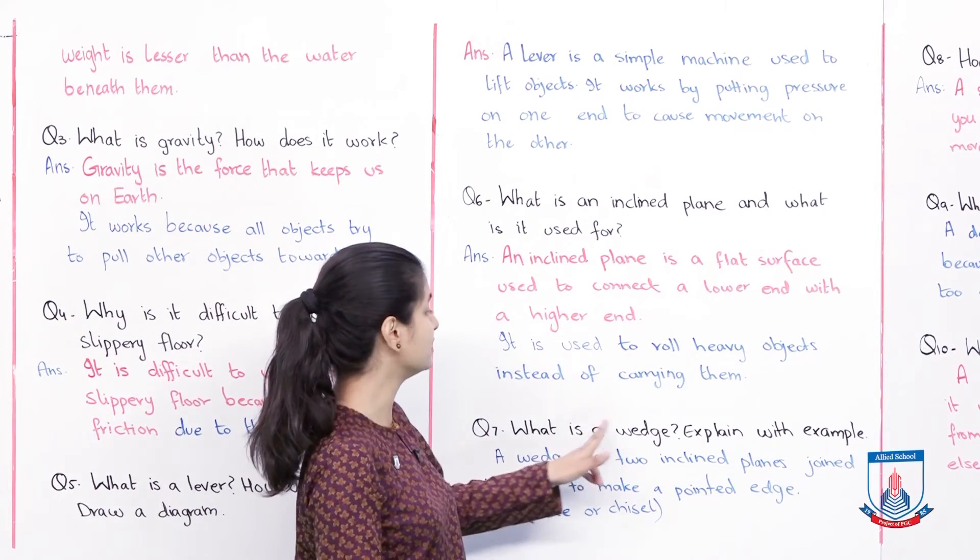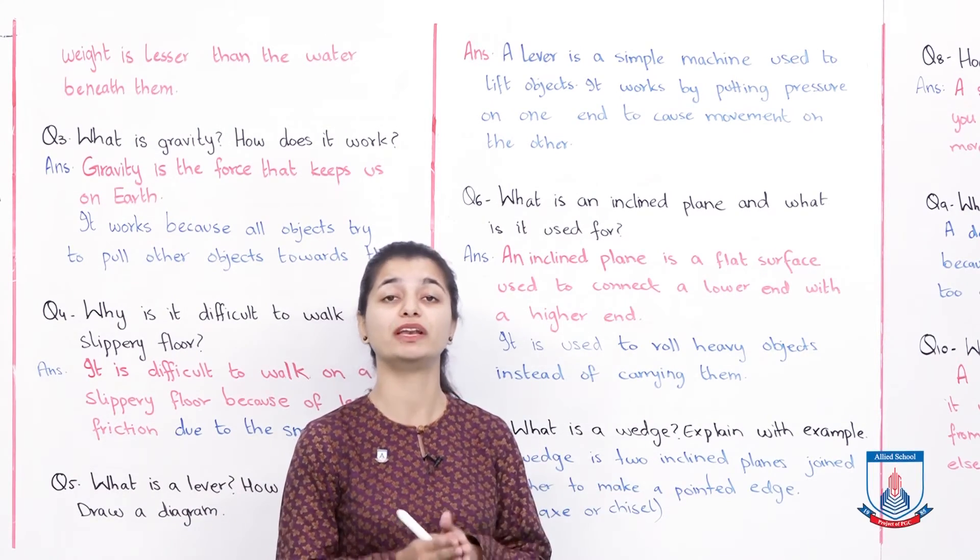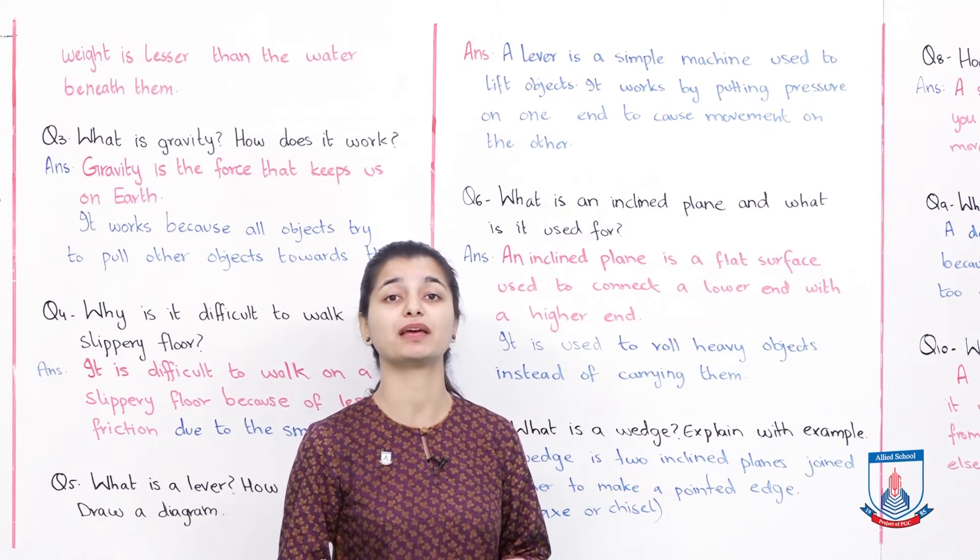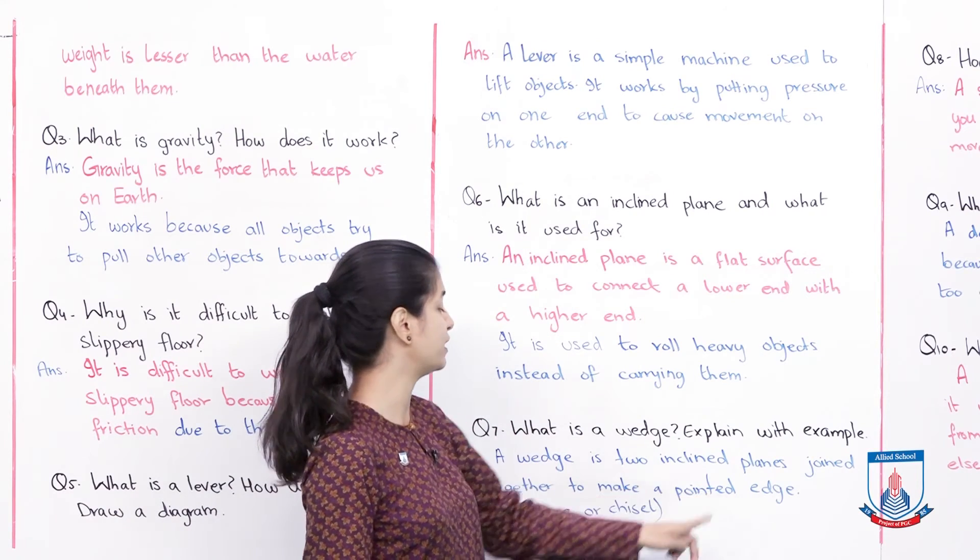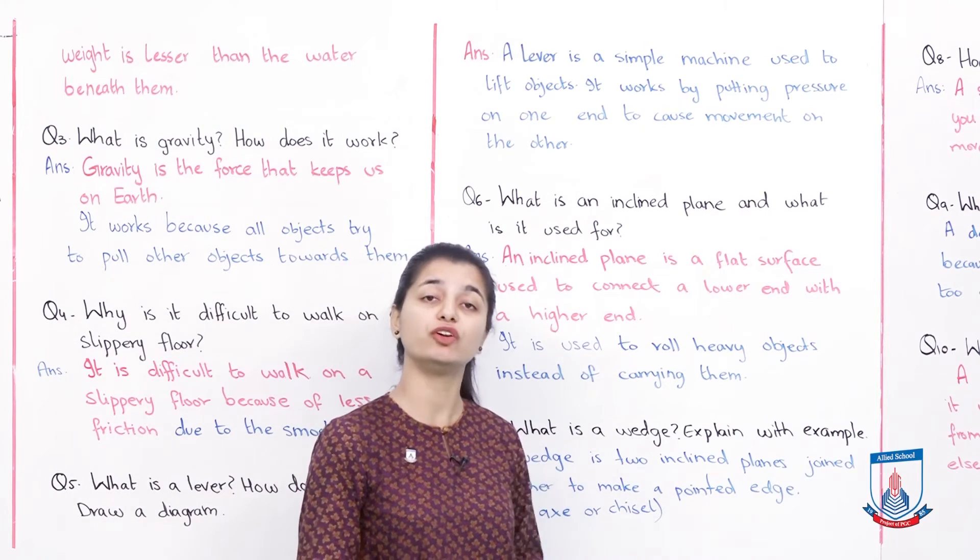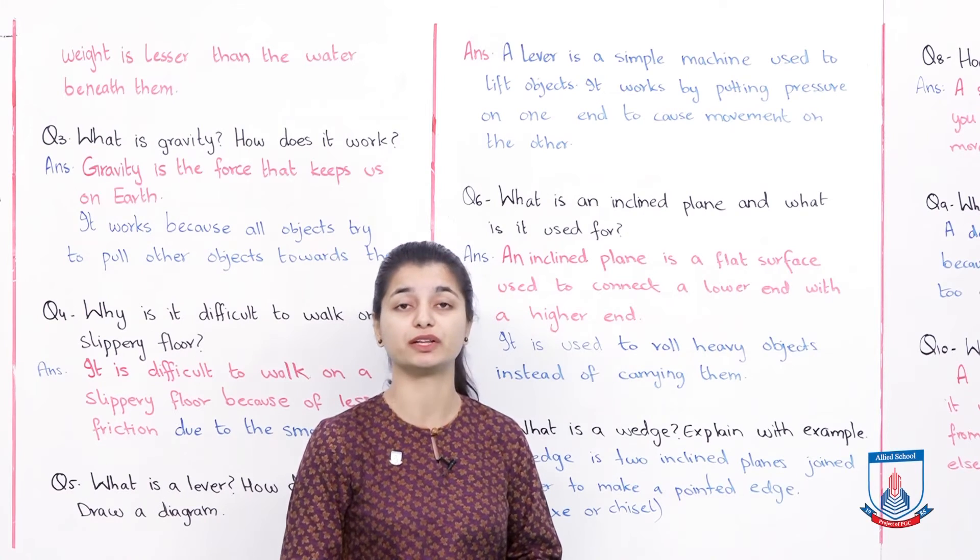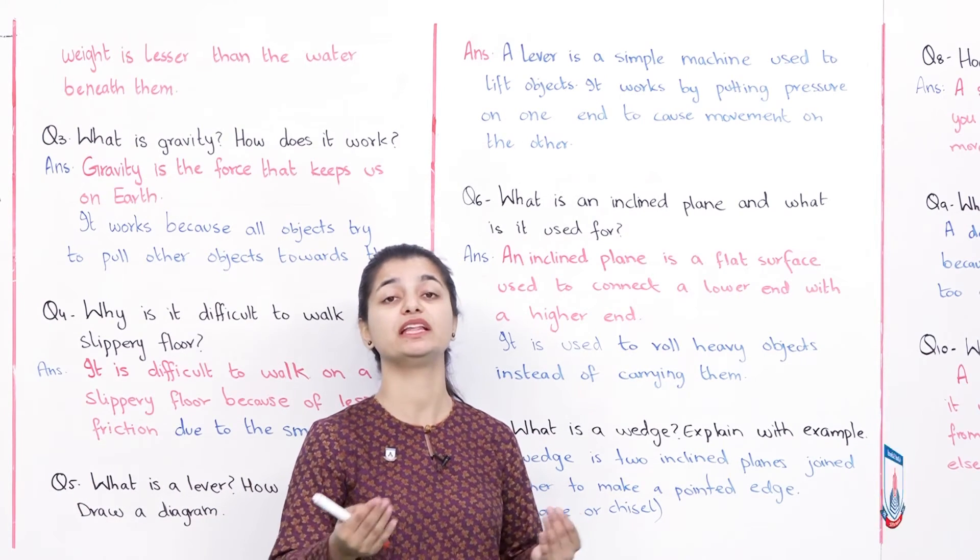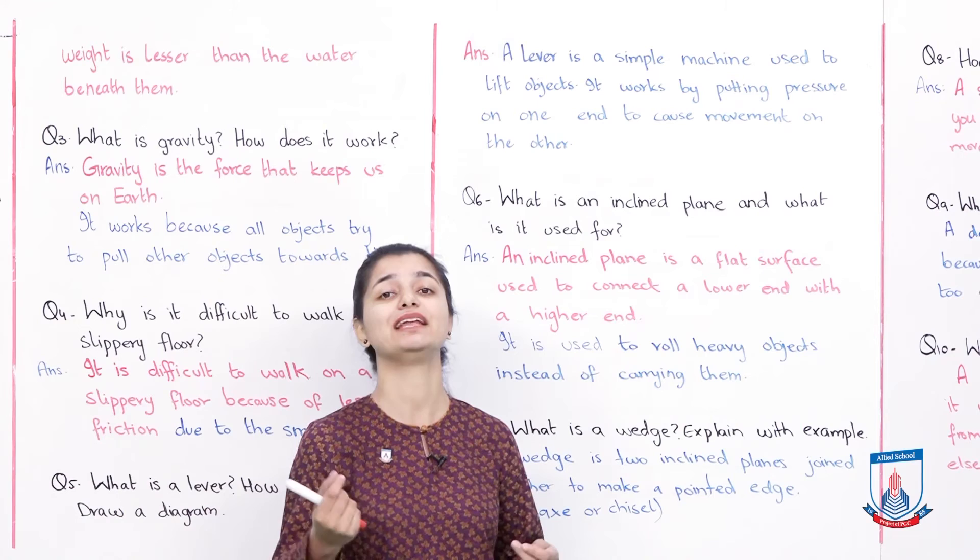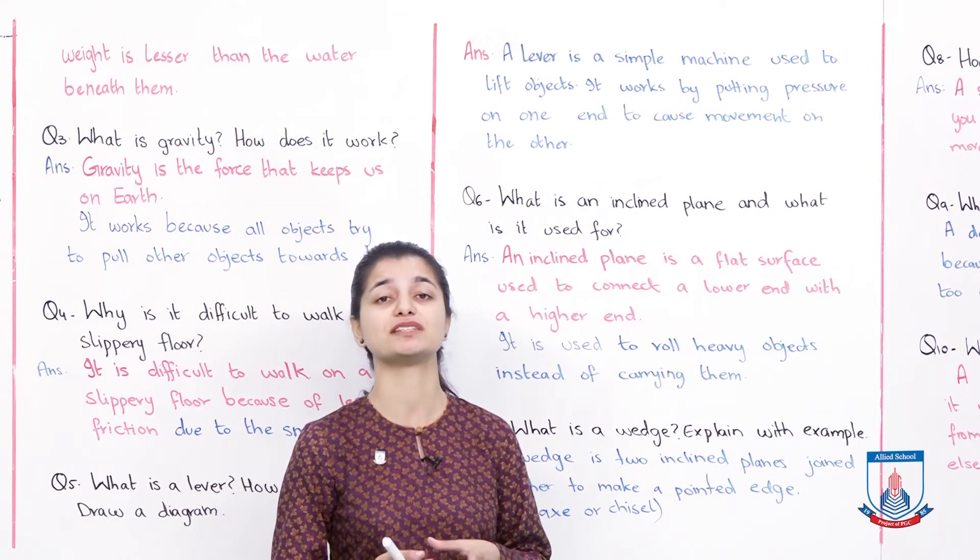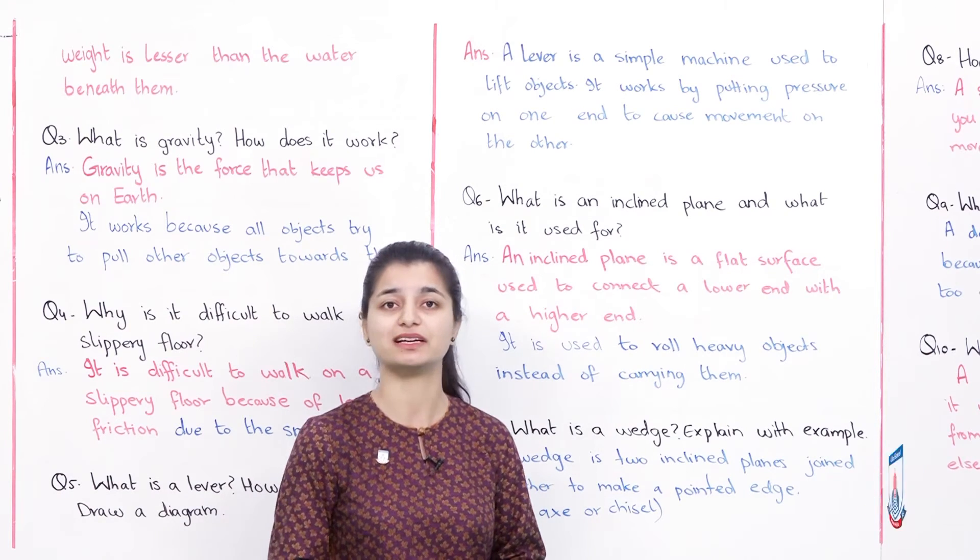Question 7: What is a wedge? Explain with an example. A wedge is two inclined planes joined together to make a pointed edge. You can use it to cut and split things. We have two examples: the chisel, which is used for cutting, and the axe.